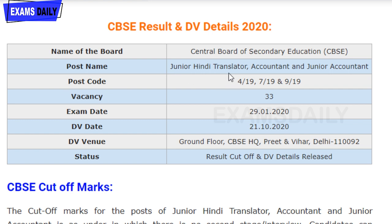The post names are Junior Hindi Translator, Accountant, and Junior Accountant, and the total number of vacancies is 33. The examination was conducted on 29/01/2020. Document verification is scheduled to be conducted on 21st October 2020, by CBSC. The venue for document verification is Ground Floor, CBSC Headquarters, Preet Vihar, Delhi.